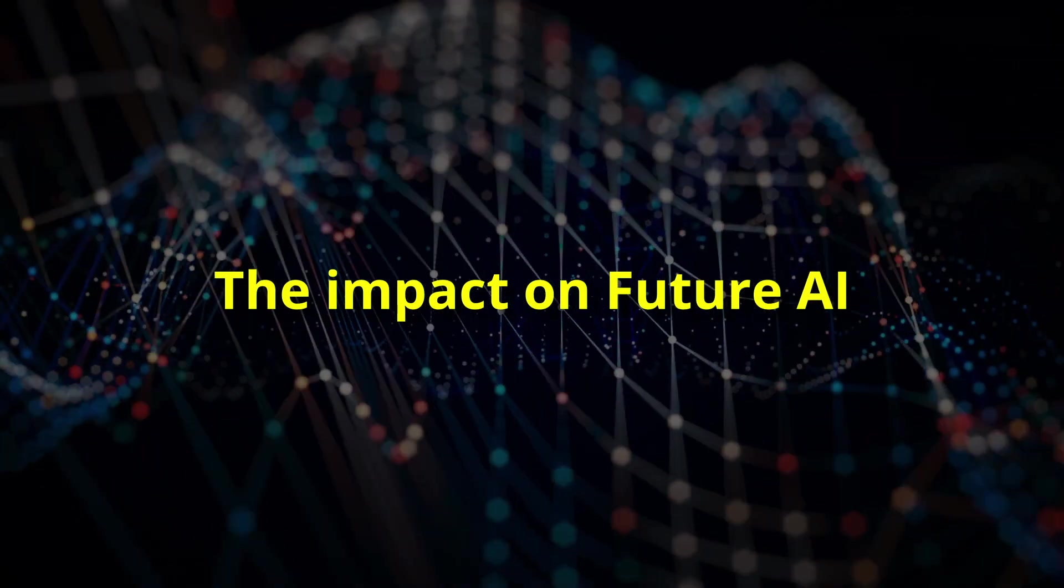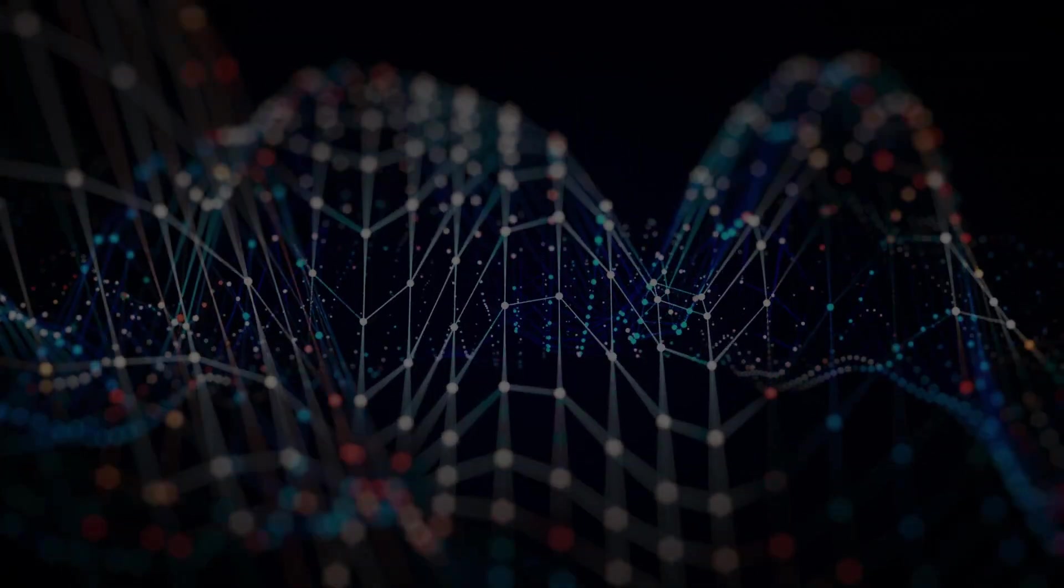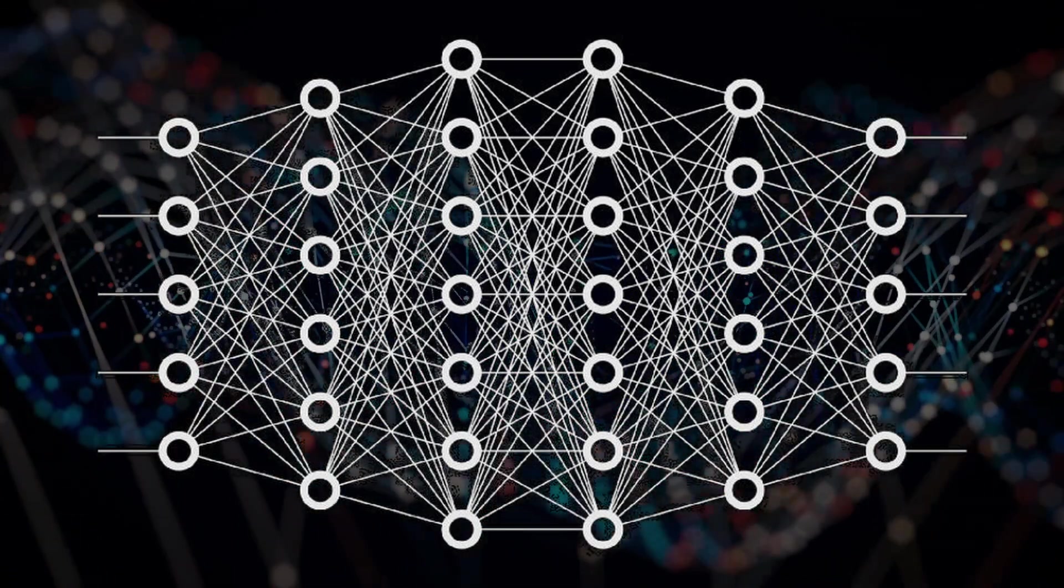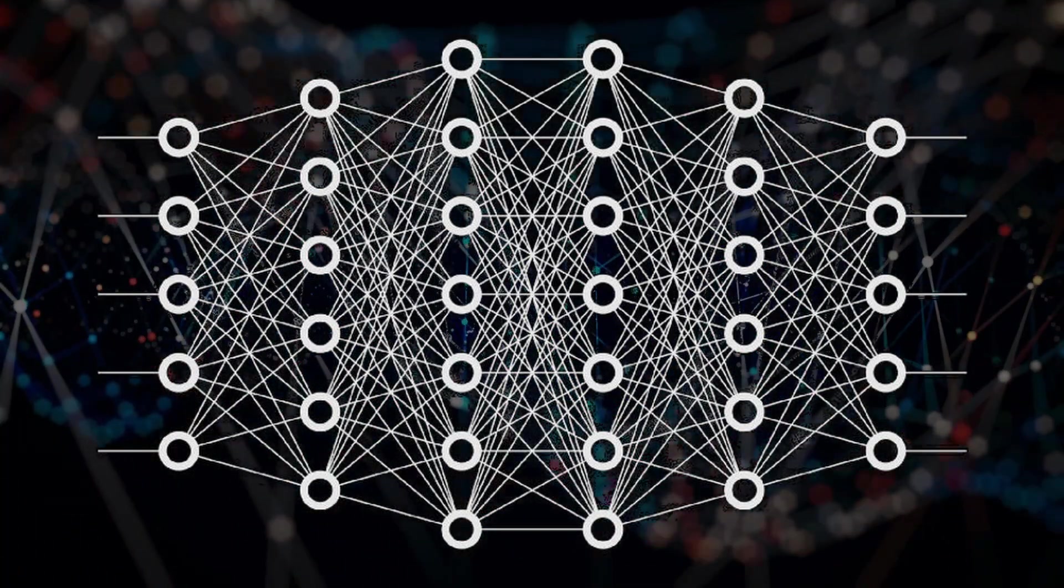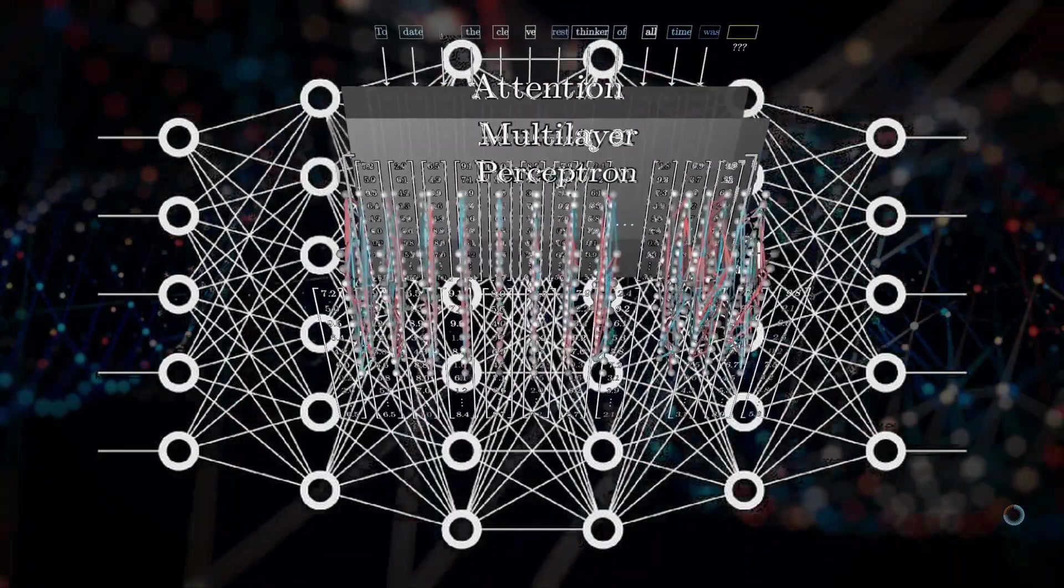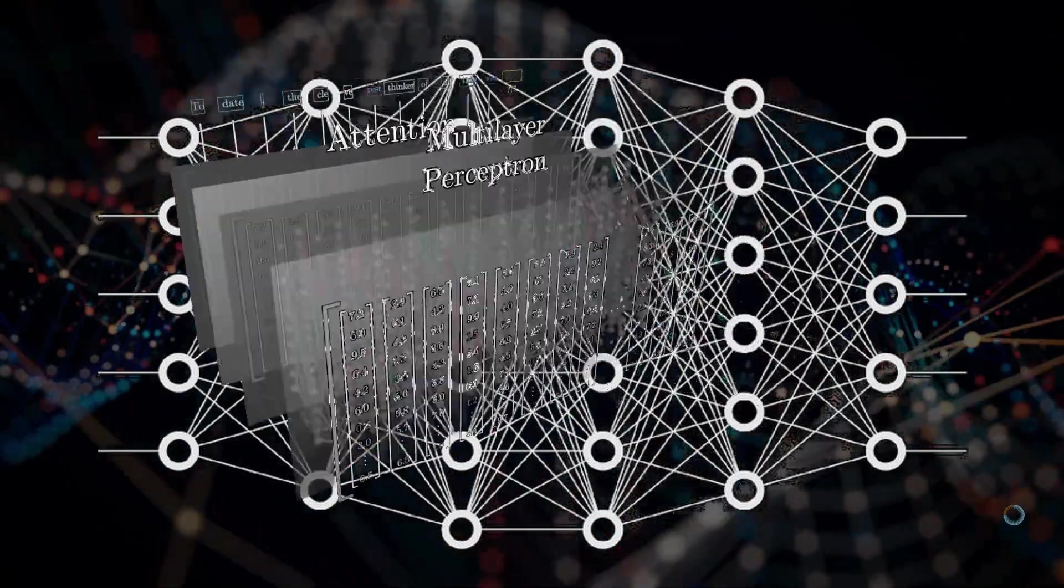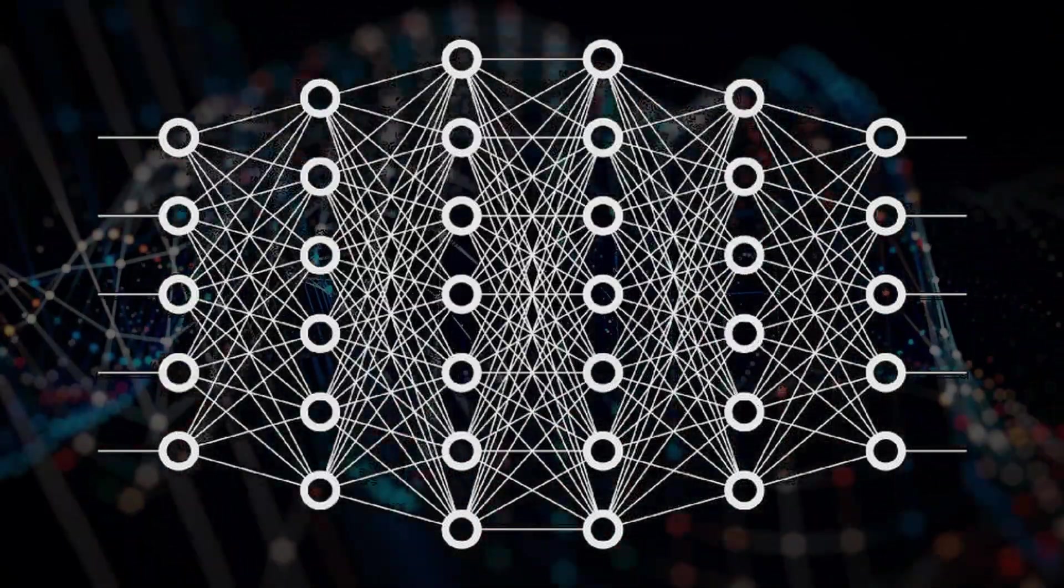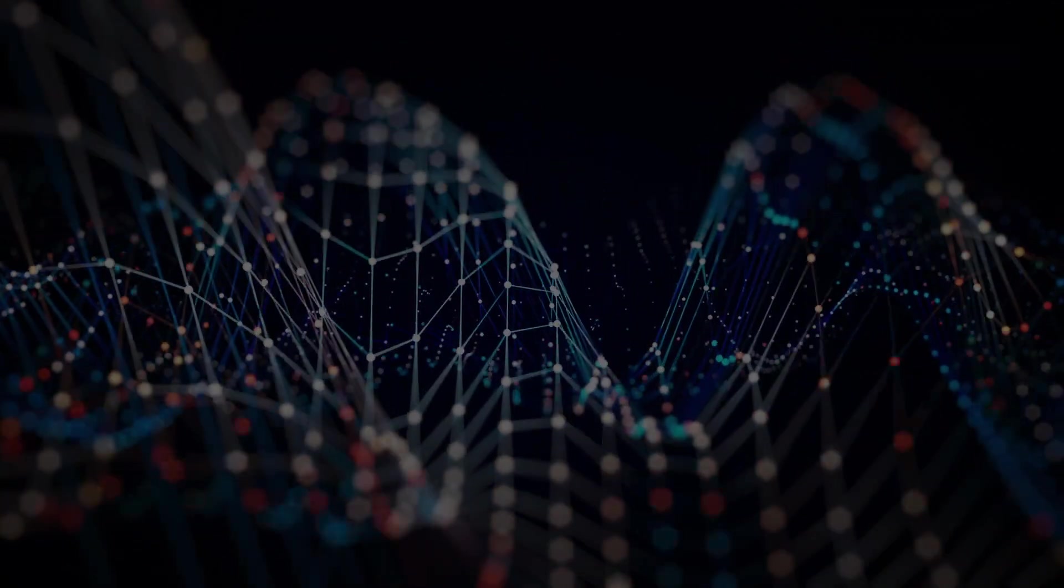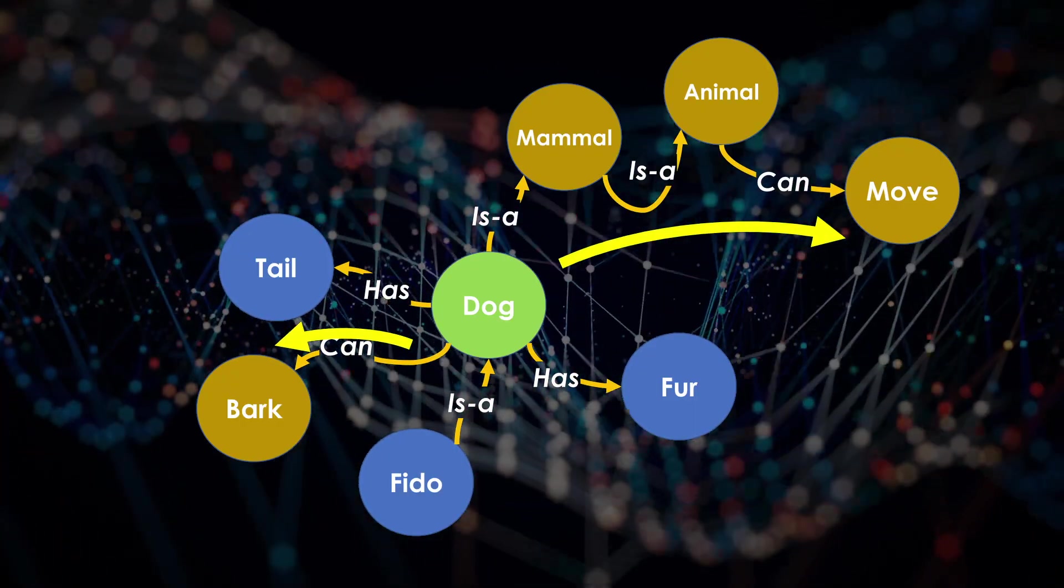This understanding of the brain's programmability has profound implications for artificial intelligence. Current AI systems like neural networks excel at pattern recognition but struggle with flexibility and adaptability. By studying how the brain organizes and processes information, we can design AI systems that are not only faster and more efficient but also capable of reasoning and adapting in ways that resemble human thought.